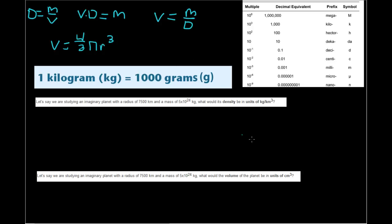Let's say we are studying an imaginary planet with a radius of 7,500 kilometers and a mass of 5 times 10 to the 24th kilogram. What would its density be in units of kilograms per kilometers cubed? All right, so here's a situation where we don't need to convert the units. We can just plug and chug.